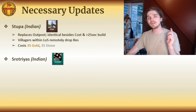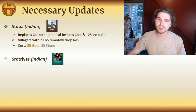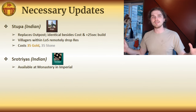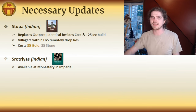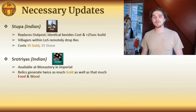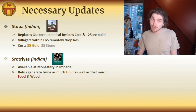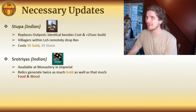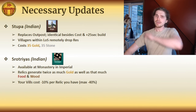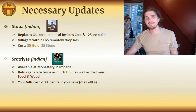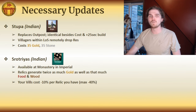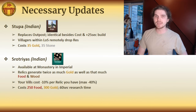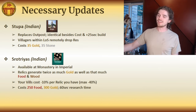The second regional feature is an Imperial Age monastery technology called Srotrias. Srotrias were like a temple tax of some kind — also referring to a rank within the temple. It makes it such that relics generate double the amount of gold, as well as that much food and wood — sextupling the total resources you're getting from relics. Additionally, it makes villagers cost minus 10% per relic you have, up to minus 40% at maximum. It costs 250 food and 300 gold, and is only available in Imperial Age.